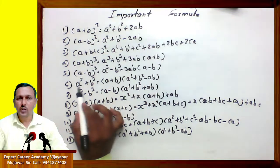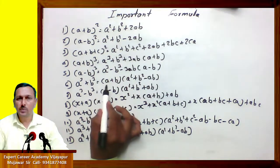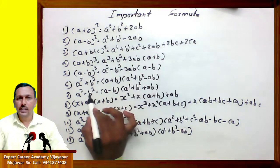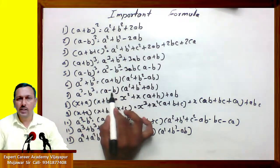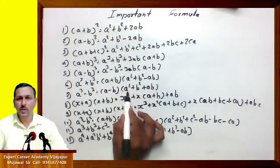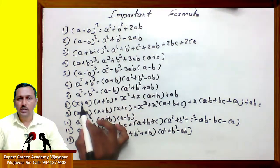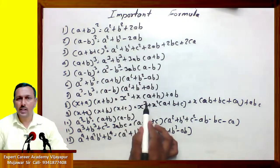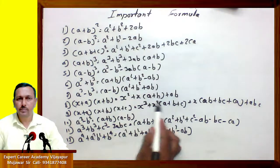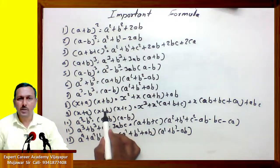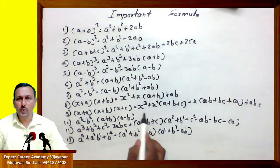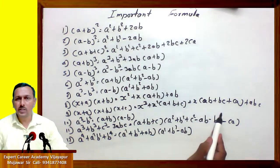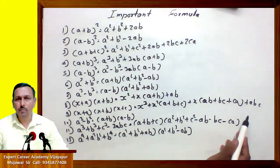Sixth one: a cube plus b cube equals (a plus b) into bracket (a square plus b square minus ab). Seventh one: a cube minus b cube equals (a minus b) into bracket (a square plus b square plus ab). Eighth one: (x plus a) into (x plus b) equals x square plus x into bracket (a plus b) plus ab. Ninth one: (x plus a)(x plus b)(x plus c) equals x cube plus x square into (a plus b plus c) plus x into (ab plus bc plus ca) plus abc.